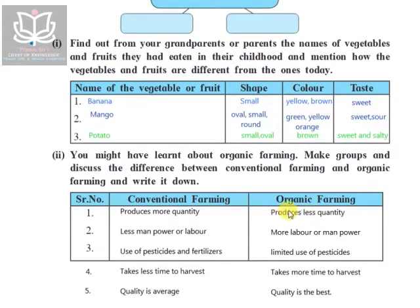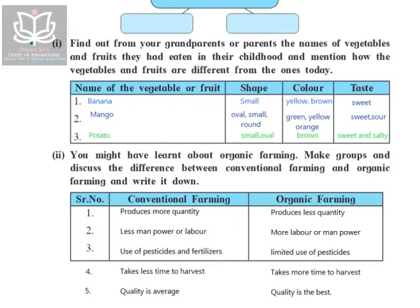In organic farming, the amount produced is quite less compared to conventional farming. Conventional farming requires less manpower or labor, whereas organic farming needs much more. The use of pesticides and fertilizers is excessive in conventional farming, because they aim to produce more than required. Organic farming uses only a limited amount of pesticides, just to protect the plants from pests and insects. Conventional farming also takes less time to harvest.